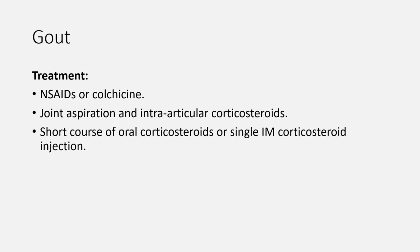Treatment of acute attacks of gout is by non-steroidal anti-inflammatory drugs or colchicine. NSAIDs are prescribed at a maximum dose as early as possible, and treatment should continue until one to two days after the attack has resolved. Co-prescribe a PPI for gastric protection. Joint aspiration and intra-articular corticosteroids are an option in people with acute monoarticular gout. A short course of oral corticosteroids or a single intramuscular corticosteroid injection can be considered in people who cannot tolerate NSAIDs or colchicine. Start urate-lowering therapy after the acute attack has resolved, not during the attack. But do not stop allopurinol or febuxostat during an acute attack if the person is already established on these drugs.